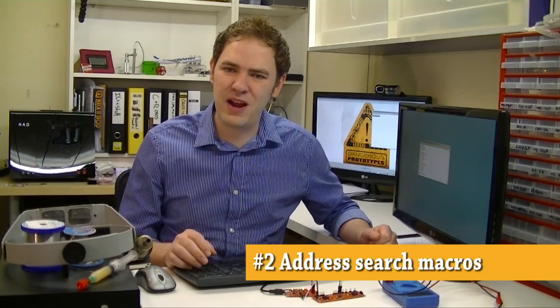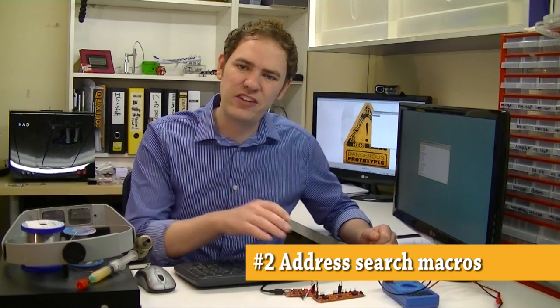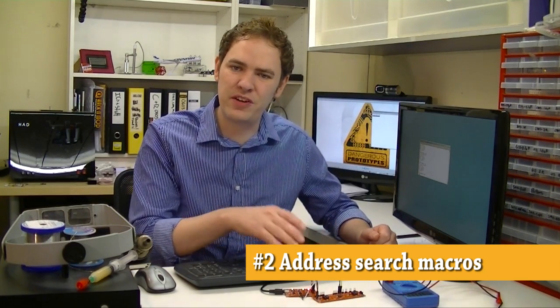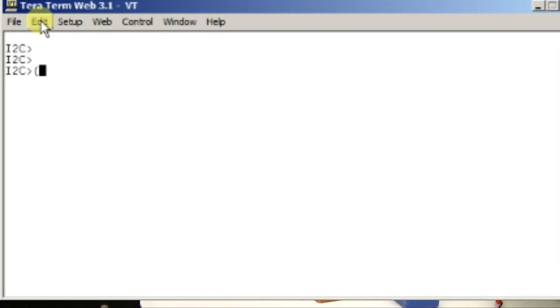My second most favorite feature of the Bus Pirate is the address search macros. I2C chips and 1-wire chips have an address you need to know to work with them. You can look this up in the data sheet, but the Bus Pirate automates the process and makes it a lot faster. We're already in I2C mode, so we can just pull up the macro menu, which is macro 0, and using macro 1, we'll search all of the possible I2C addresses.